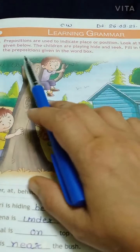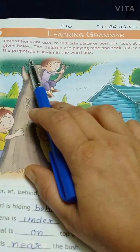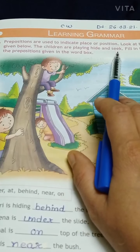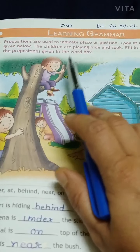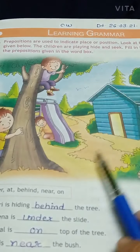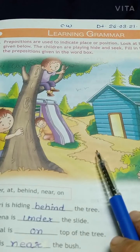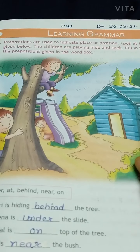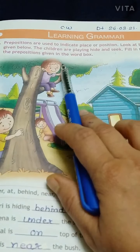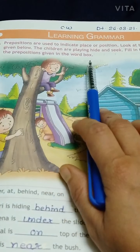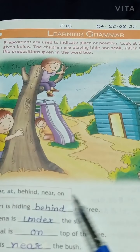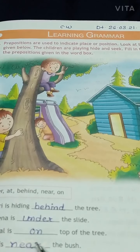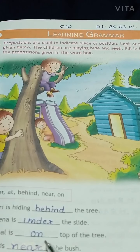Look at the picture given below. The children are playing hide and seek. नीचे दिये गए picture को देखें, बच्चे hide and seek खेल रहे हैं। Fill in the blanks with the prepositions given in the word box. Word box में दिये गए prepositions के साथ blanks को fill करें।